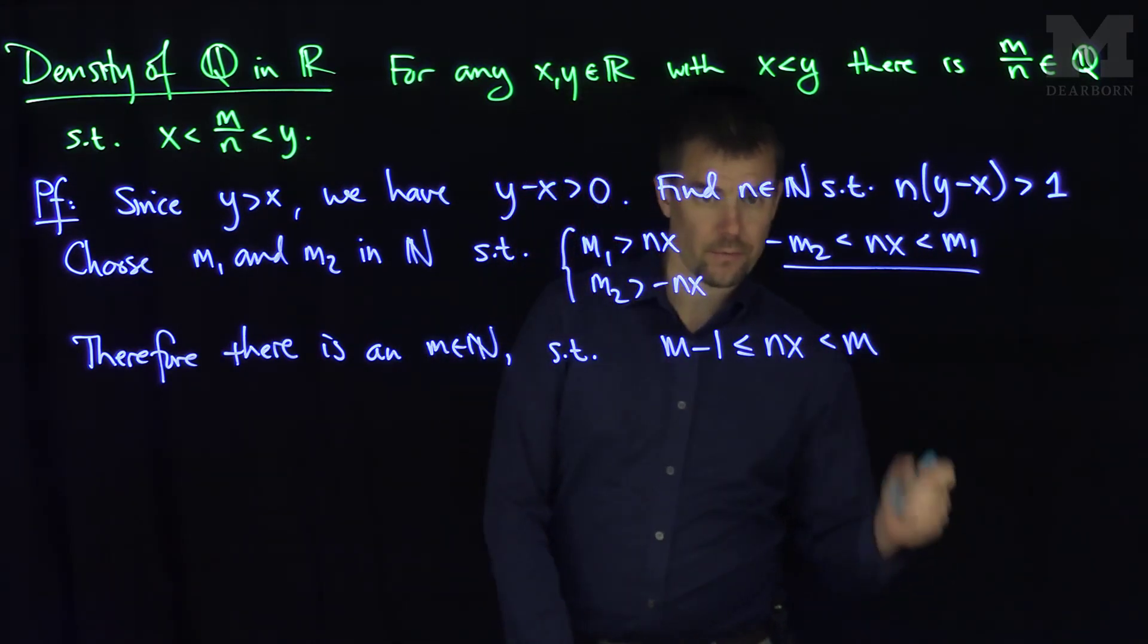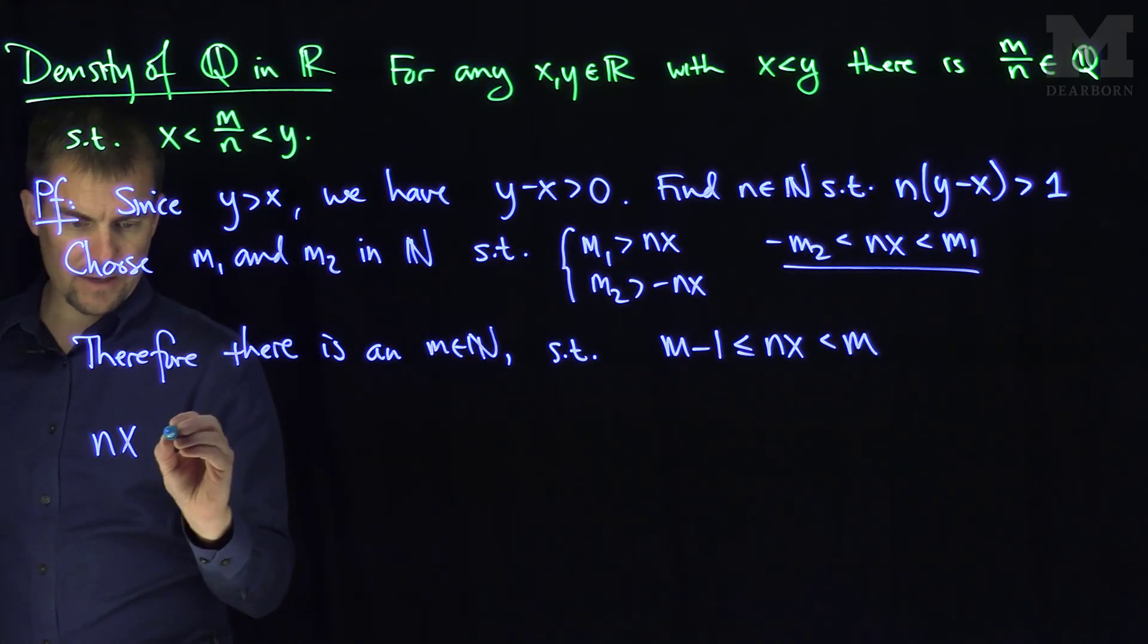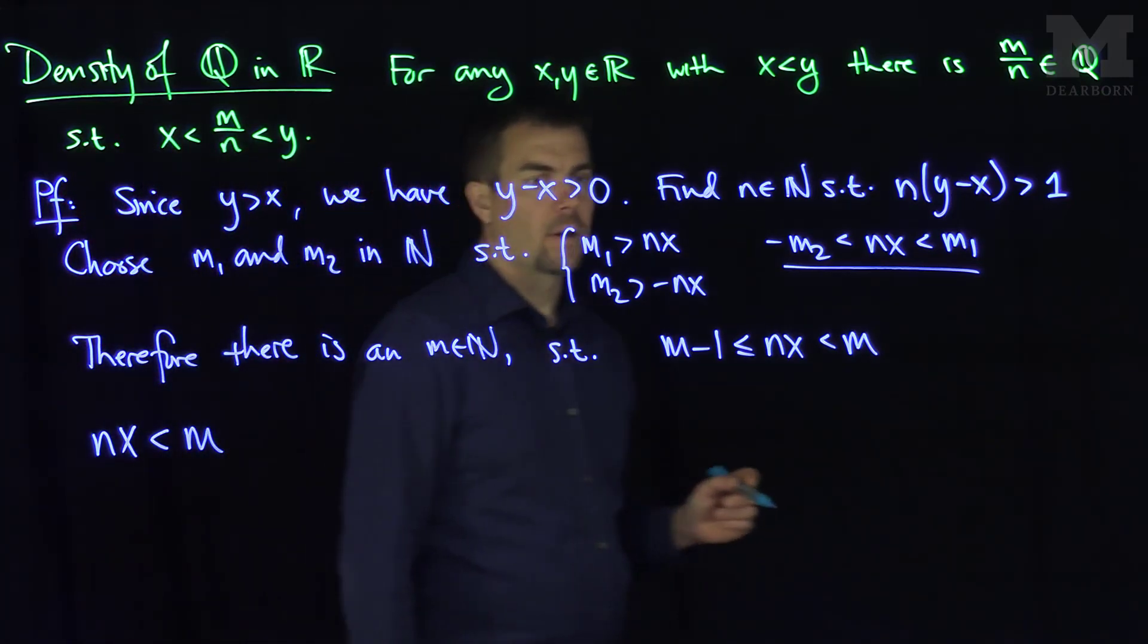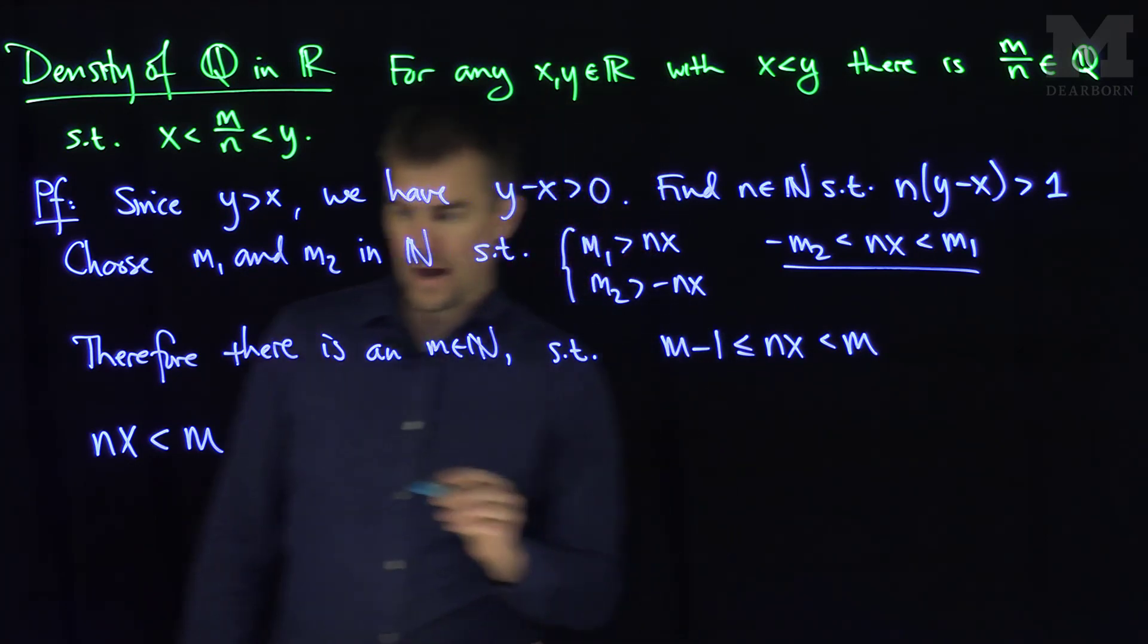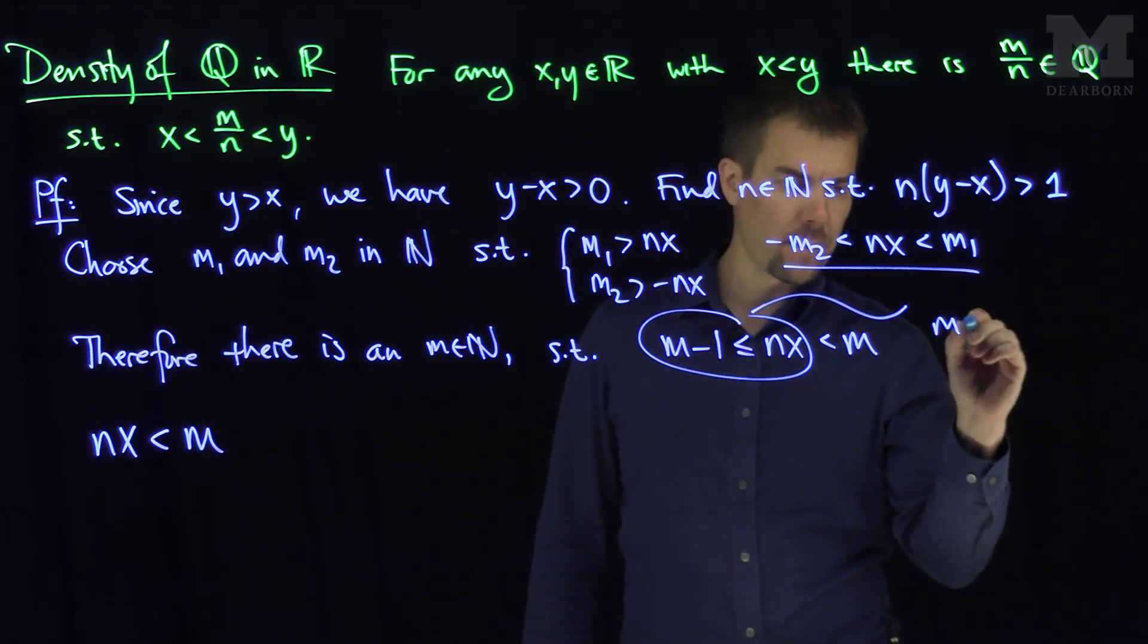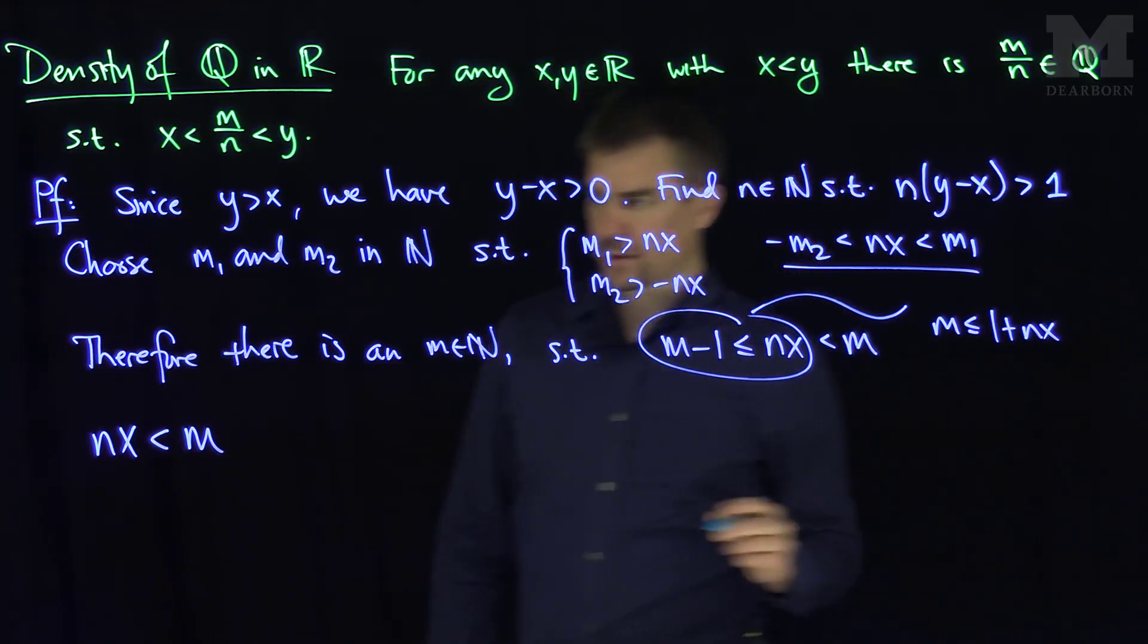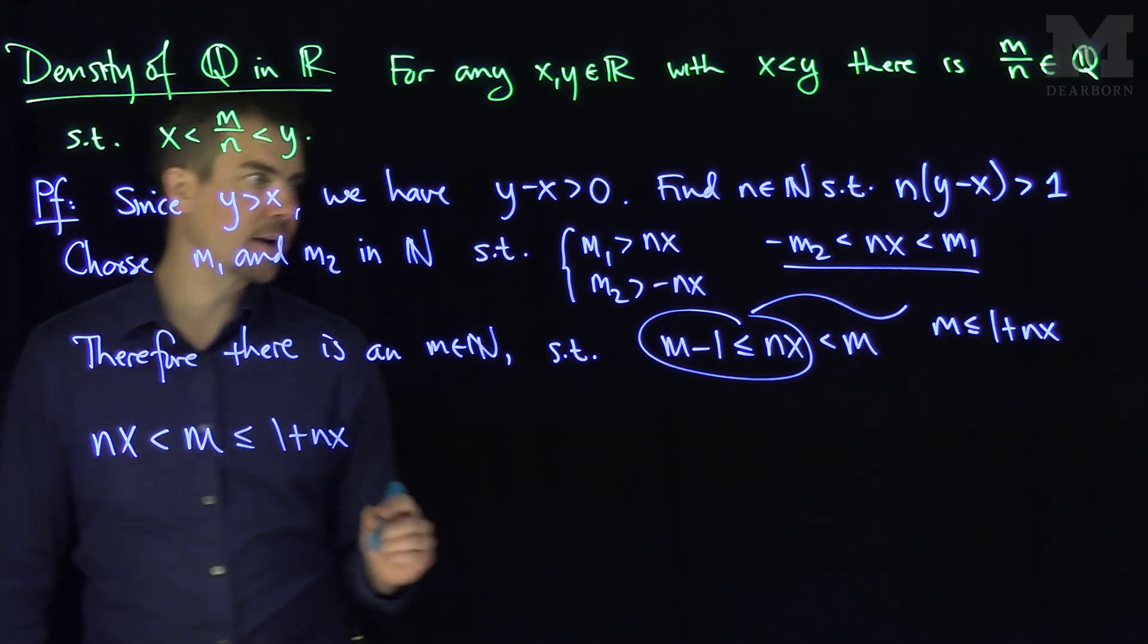And now we can put these chains together. So for this particular m, we have that n times x is less than m. And m is less than one plus nx from this inequality over here. So we can see that m is less than or equal to one plus nx.